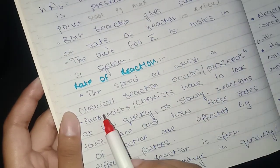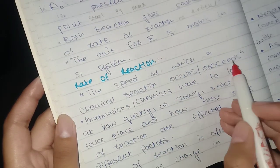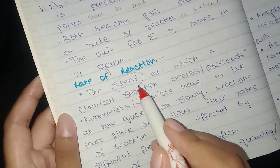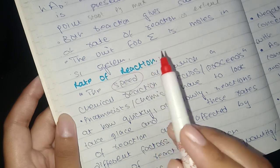The speed at which a chemical reaction occurs, we call rate of reaction.